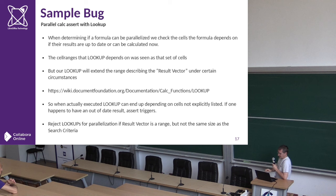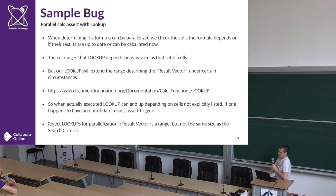In LibreOffice Calc, we extend the range of cells in various circumstances, using data not described directly in the formula as input. This is why the assert was firing and why these 13 or 14 parallel Calc documents were failing. We constrained that particular calculation to only work with well-formed lookup functions that fit the criteria suitable for parallelization. There is one remaining Calc parallel issue to be solved, perhaps of a similar nature.